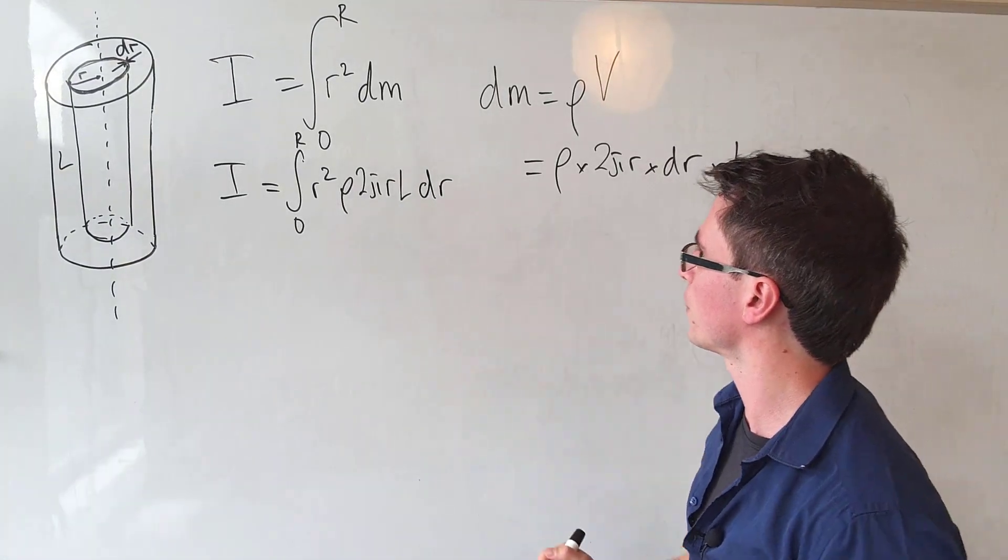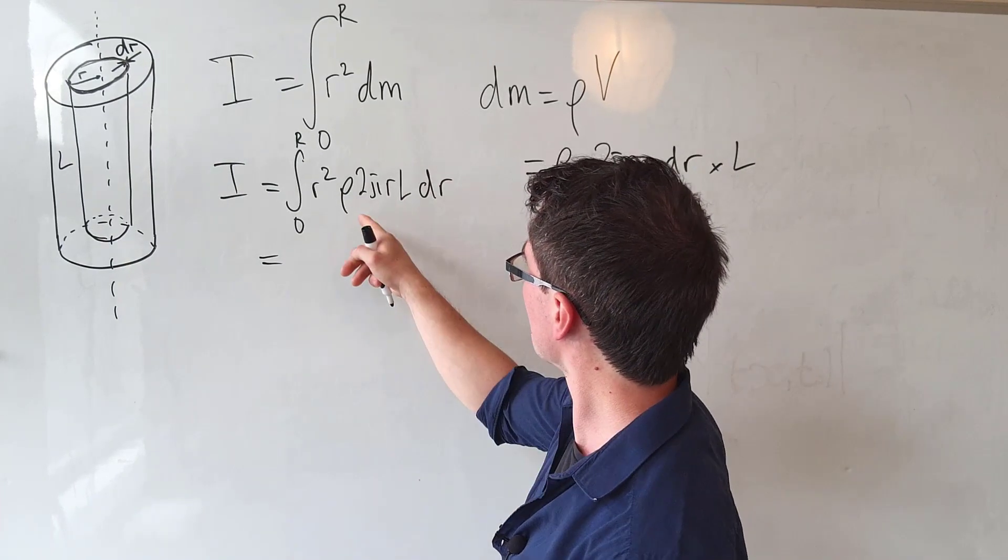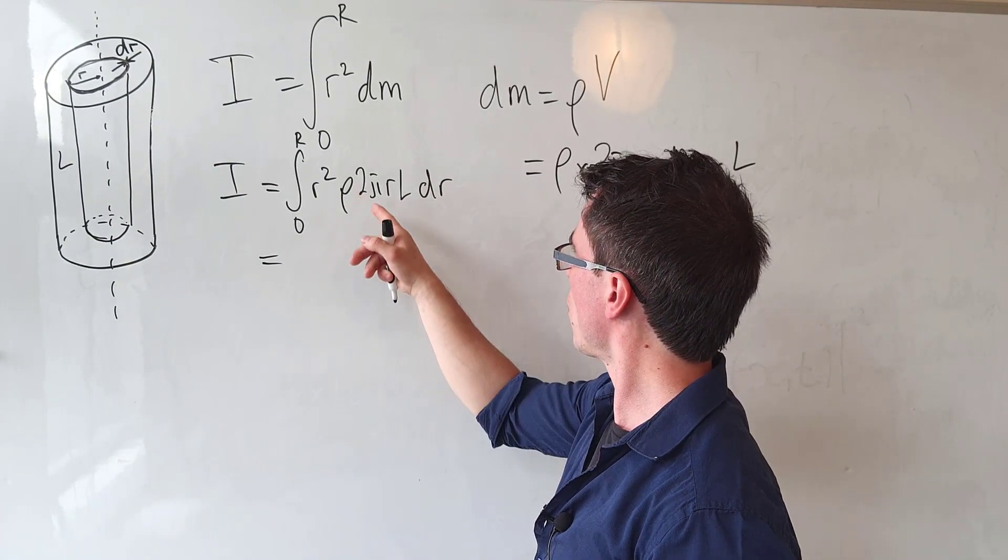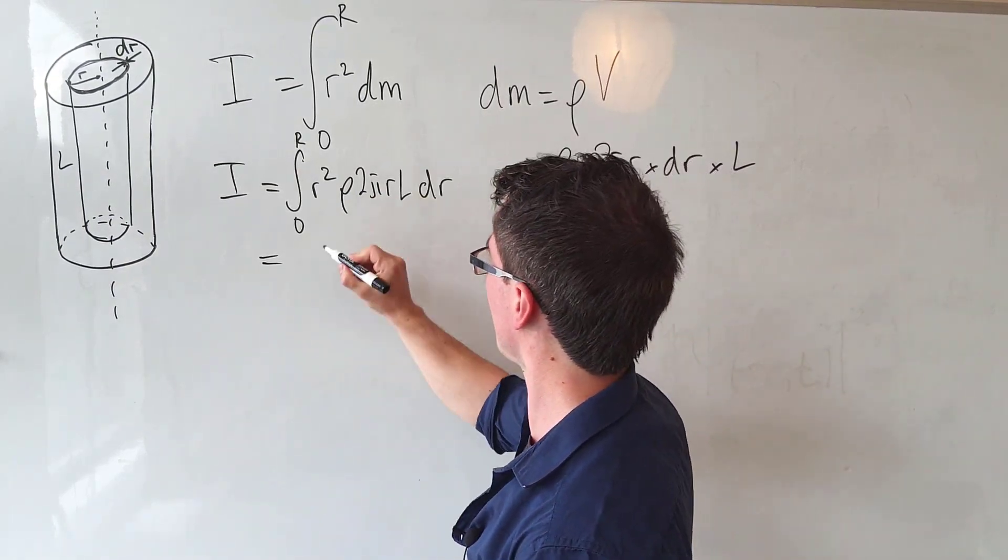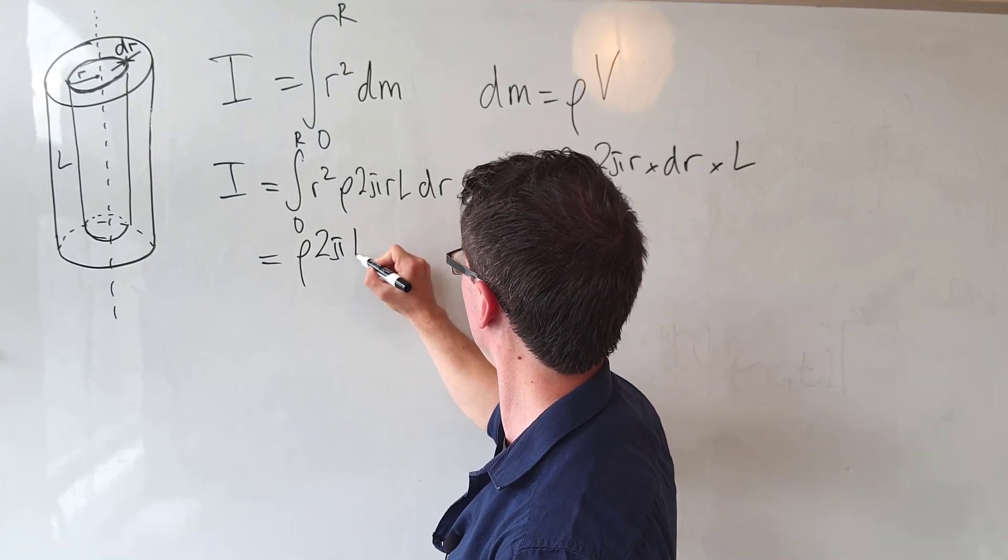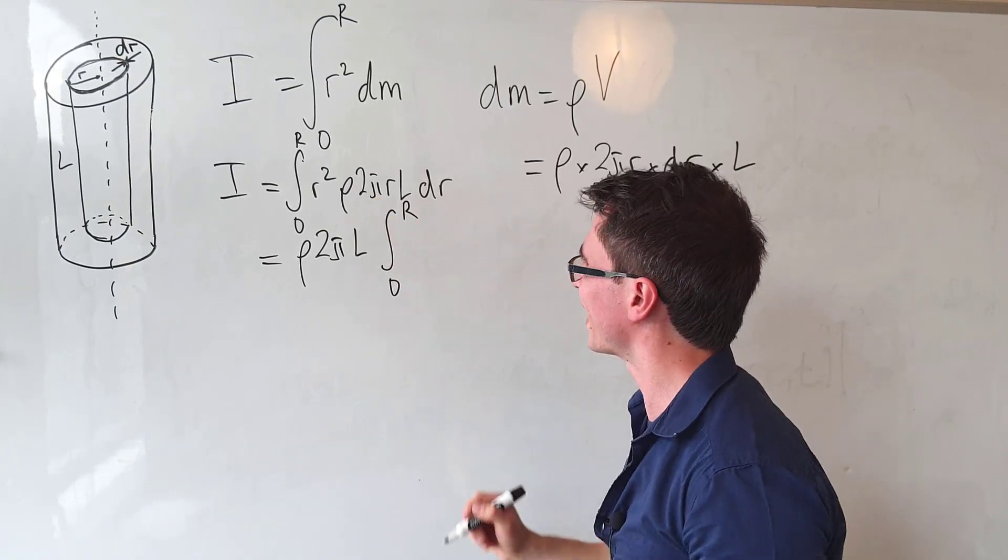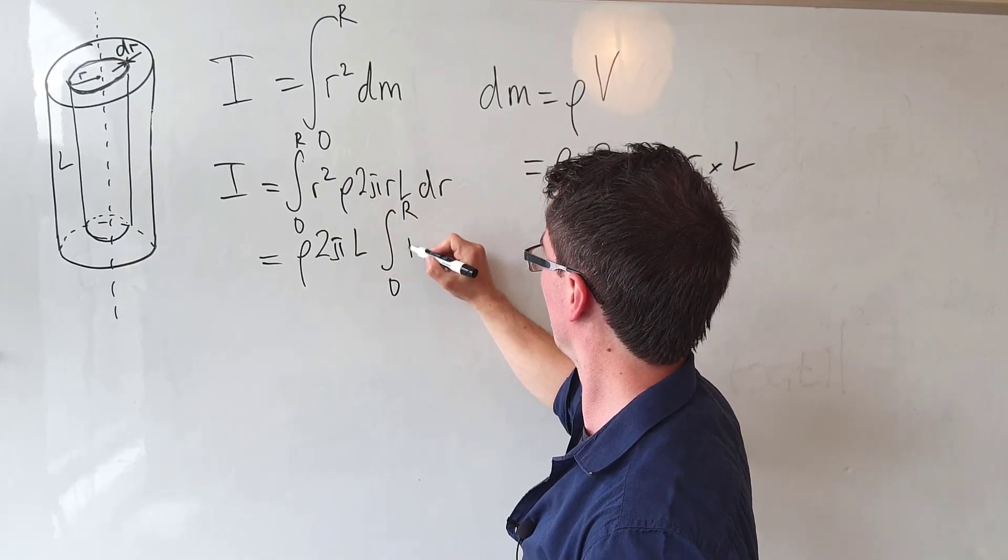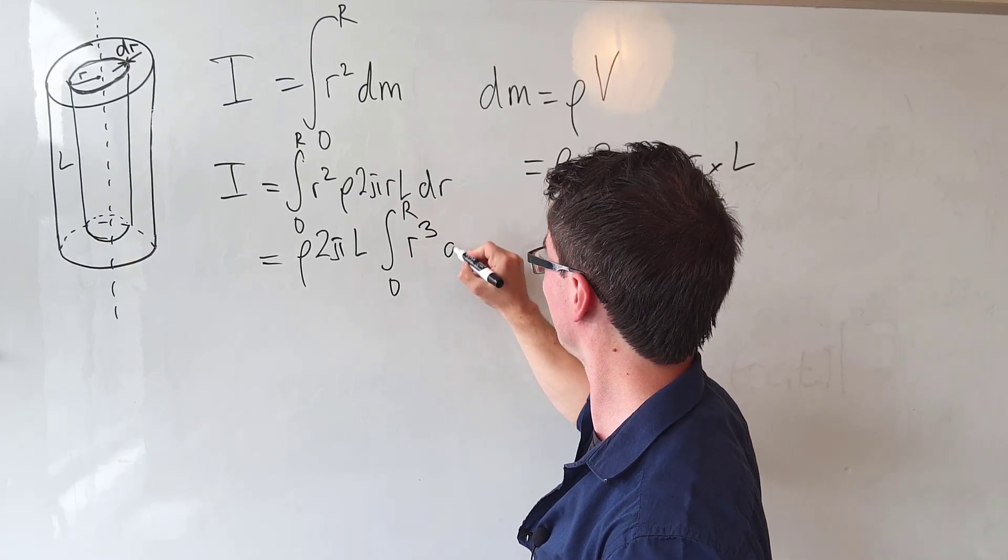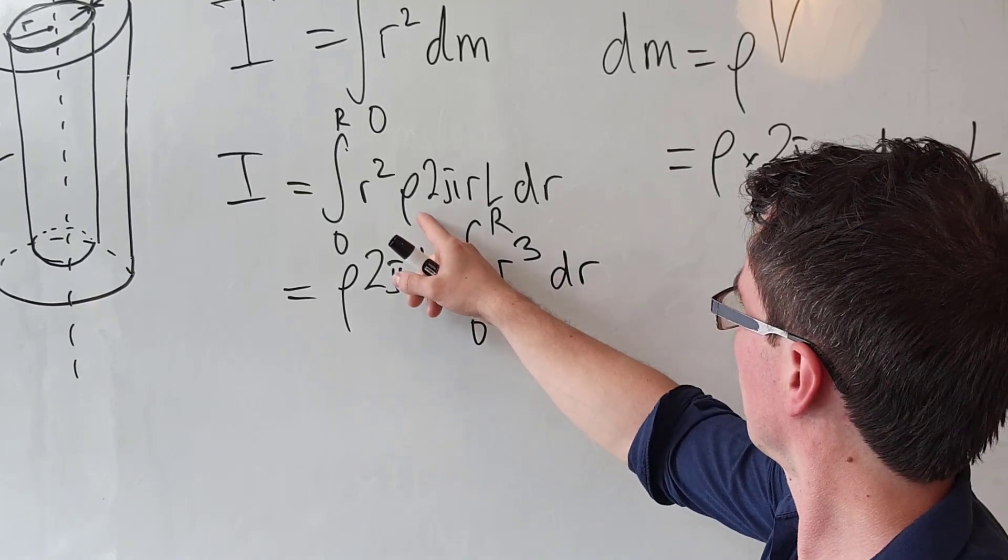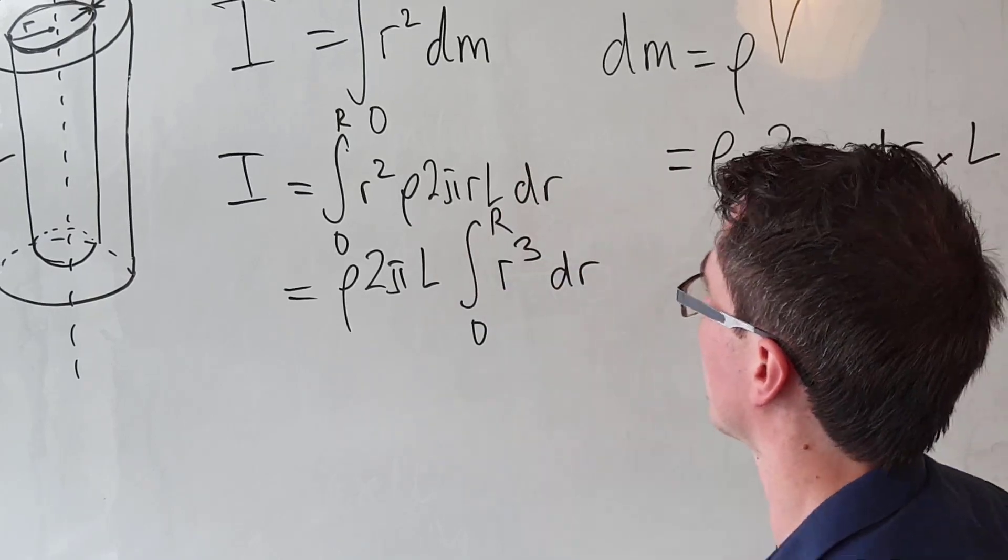Now this integral is in terms of dr and we can simplify this further. So we can see that rho, 2 pi, and l are constants so I can take them outside of the integral sign. So it's going to be rho 2 pi l. What I'm left with inside is the integral between zero and r of r squared times r, which is just going to give me r cubed dr. Let's just check that's right. So that's out, that's out, that's here, r is in, r is out, dr. Okay, yeah.